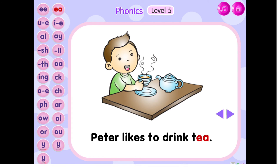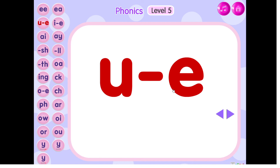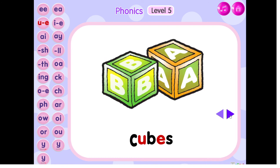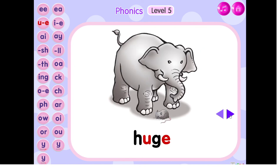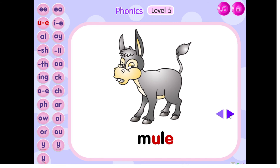The sound of ee is ee. K, oops, cubes. T, oop, tube. H, huge. M, eel, mule.